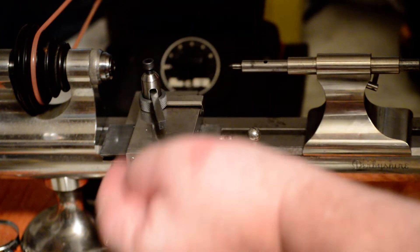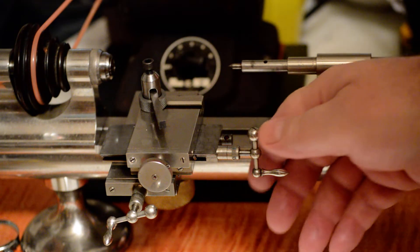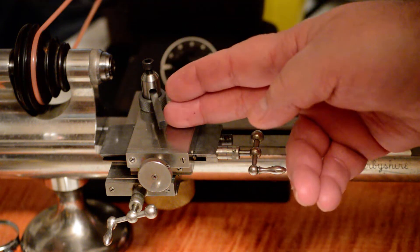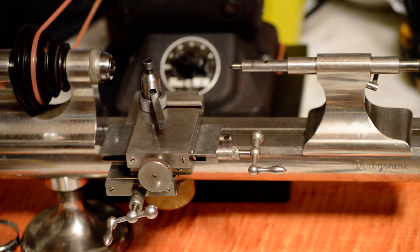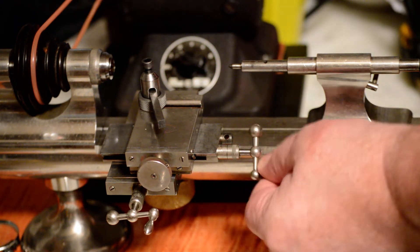...it really only moves in five. But if I move this one here 10 thousandths, it actually does directly move 10 thousandths. So that's the basics of direct reading and indirect reading on the scales when it comes to lathes.